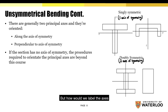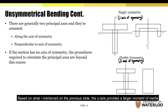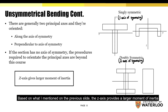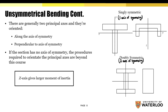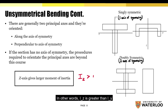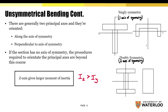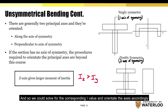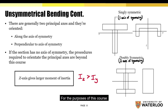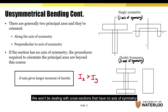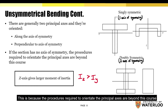But how would we label the axes? The z axis provides a larger moment of inertia — in other words, Iz is greater than Iy. And so we could solve for the corresponding I value and orientate the axes accordingly. For the purposes of this course, we won't be dealing with cross sections that have no axis of symmetry, because the procedures required to orientate the principal axes are beyond this course.